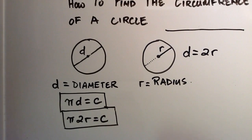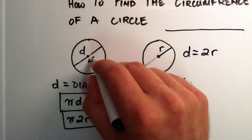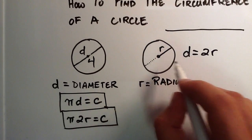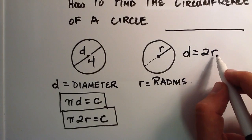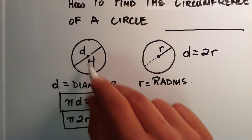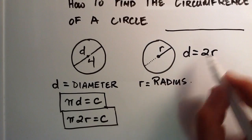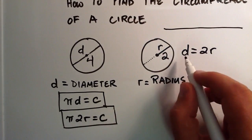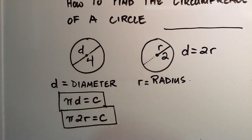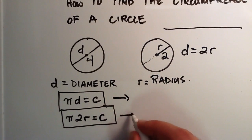Let's go ahead and do a quick example. Let's say that the diameter of our circle is equal to 4, and that implies that our radius is equal to 2, since 2 times 2 equals 4, so d equals 4. Two times something equals 4 has to be a 2. That makes sense because twice the radius is equal to the diameter: 2 times 2 equals 4. So we're going to plug it in to the corresponding equations.